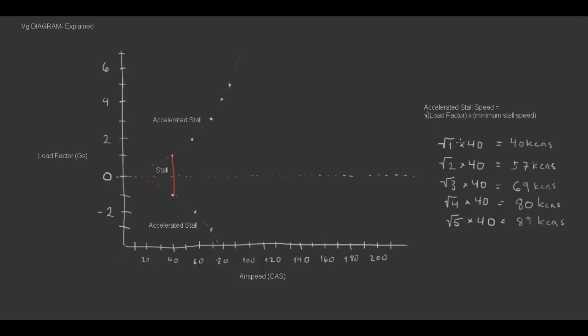So the square root of 1 multiplied by 40 is 40, so we have our first dot there. The square root of 2 multiplied by 40 is 57, so we have that dot there. The square root of 3 by 40 is 69, and so on. And we have this nice curve.